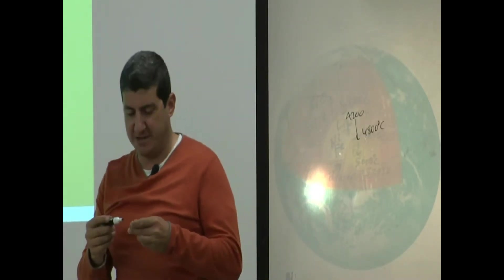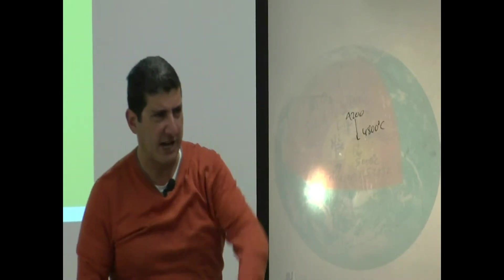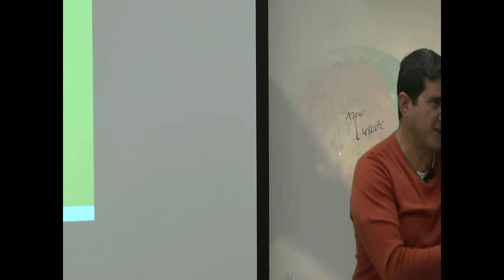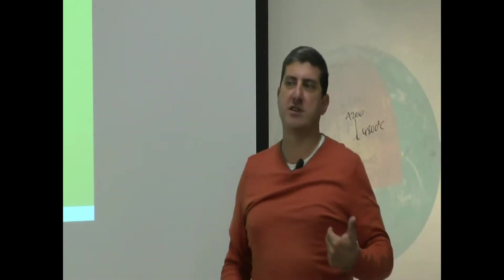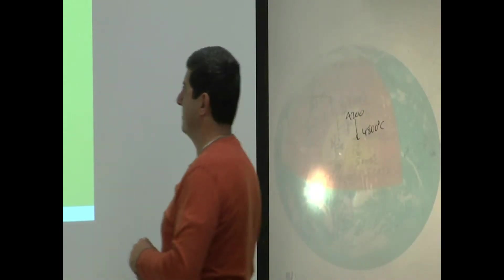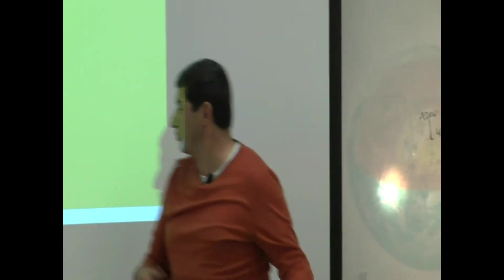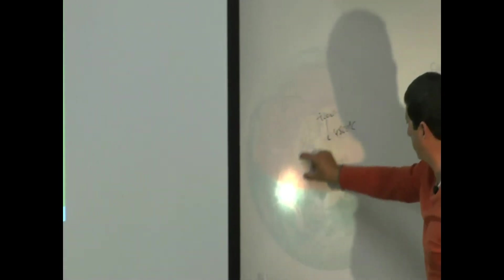You know the movie Journey to the Center of the Earth? They go down there and there's an ocean. Well, it's partially true. There is ocean there, there's liquid. But of course I'm not going to say there are dinosaurs there and everything. But that theory that there's a liquid ocean there is true. This is it, right here, this layer of liquid.